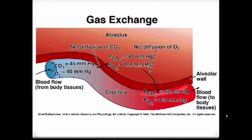In gas exchange, we're going to use these ideas of partial pressures to drive diffusion of gases across the respiratory membrane. Everything diffuses from greater pressure to lesser pressure. So CO2 in the blood coming into the alveoli should be at a higher partial pressure than CO2 in the alveoli — and it is — so CO2 diffuses across into the alveoli and you can exhale it. At the same time, the blood coming in should have a lower oxygen partial pressure than the alveoli, so oxygen moves from greater to lesser partial pressure and into the capillaries.